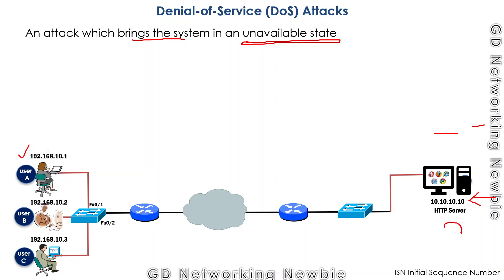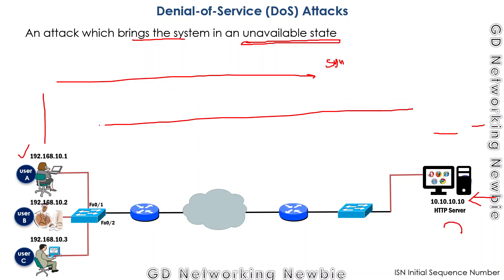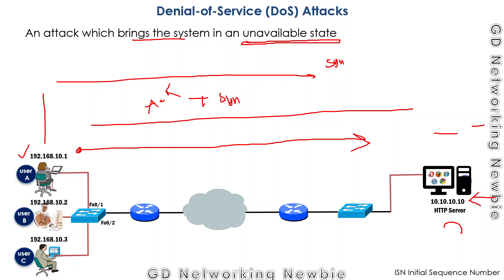That TCP connection requires a three-way handshake. In this three-way handshake, the client sends a SYN message, and in response the server sends an acknowledgement plus a SYN message. That SYN message will have the initial sequence number from the server, and finally the client sends an acknowledgement back to the server.